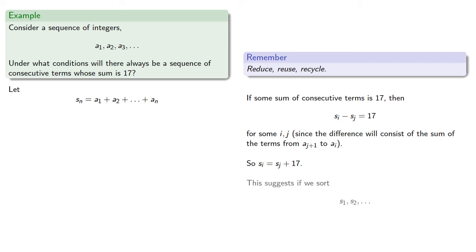This suggests that if we sort a list consisting of the si's and the si's plus 17, in a way that two of them end in the same bin, we're done.